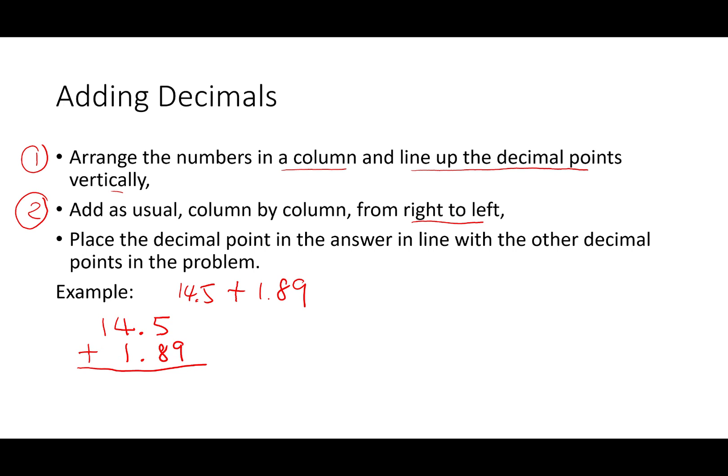Once we line up the decimal places together, we learned that adding a trailing zero behind a decimal place does not change the value, so we can add a zero here after 5. Then we can proceed with the usual addition. That will give us 9, 8 plus 5 is 13, so we write 3 here and carry 1 over.